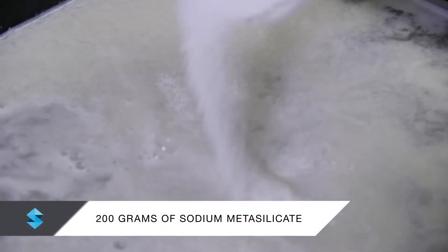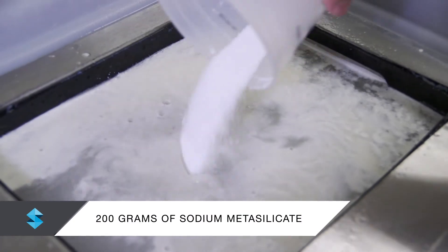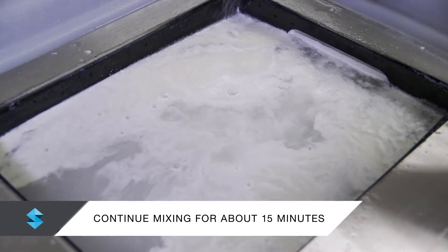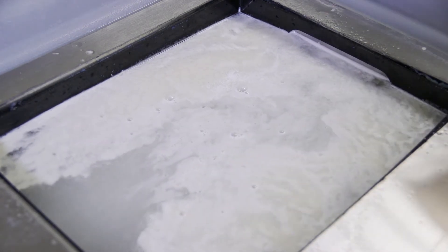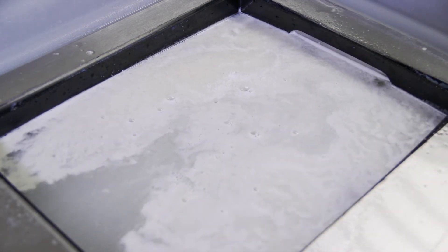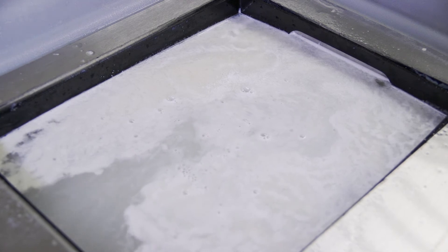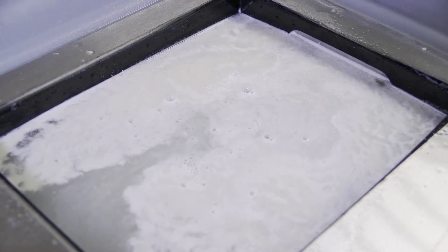Next, add 200 grams of sodium metasilicate to the solution and continue mixing for about 15 minutes. You now have a solution with approximately 2% sodium hydroxide and 1% sodium metasilicate. If you need to fill a larger tank, maintain these proportions.